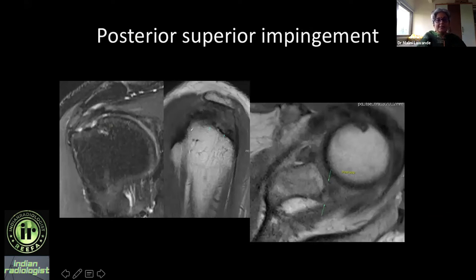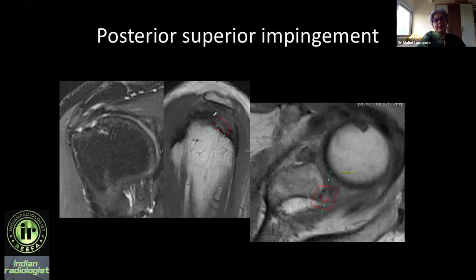Here I see a posterior superior labral tear clearly, with a small incipient paralabral cyst which can enlarge and sometimes cause compression of the suprascapular nerve branches. I also see a posterior supraspinatus and anterior infraspinatus undersurface tear.